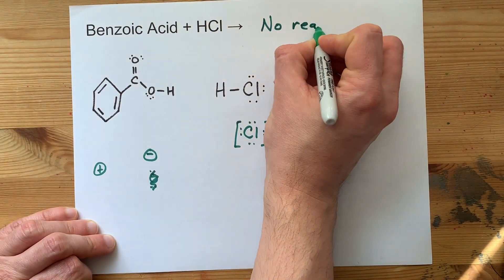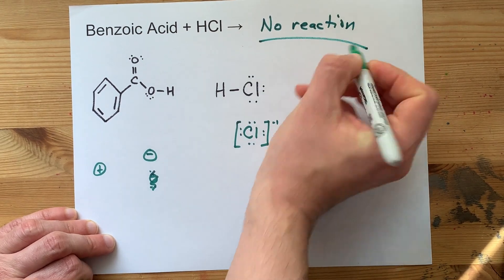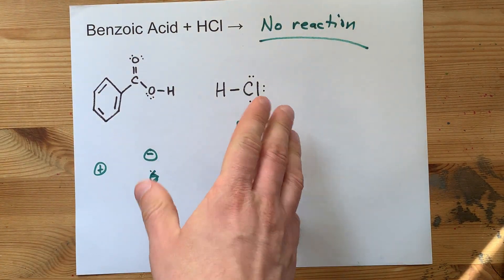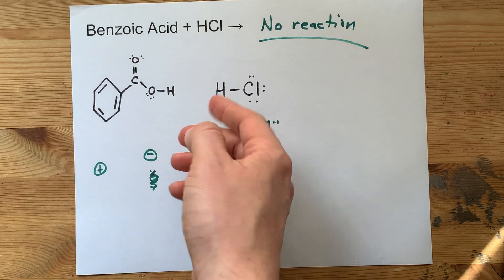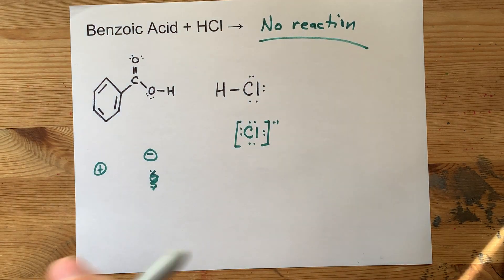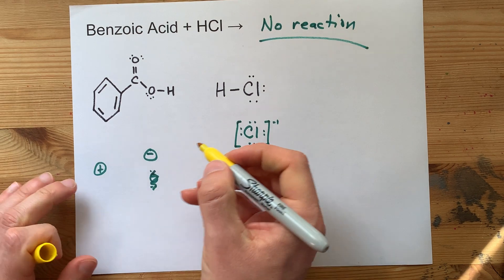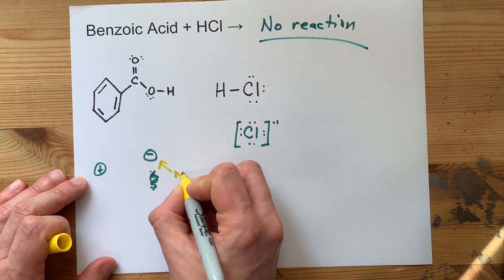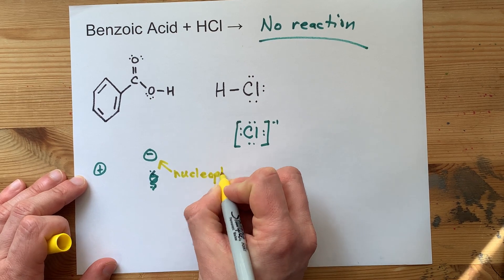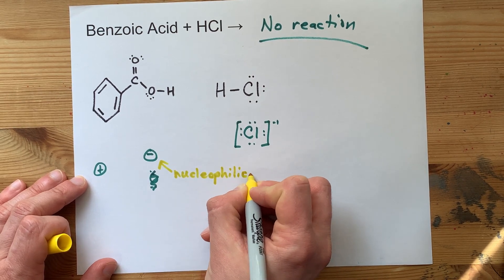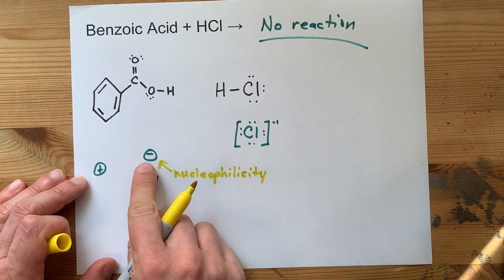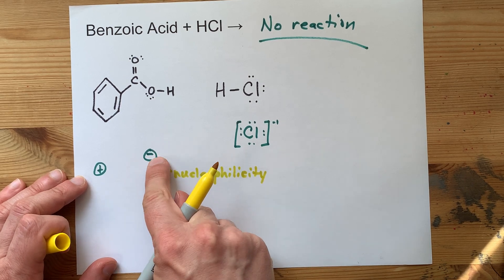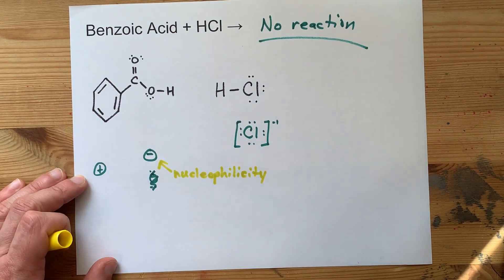The official answer here is that there is no reaction. And if you are looking for proof that chloride is not powerful enough to do that, I think what you want to look at is something called nucleophilicity. It is how much that minus charge seeks out other positive charges.